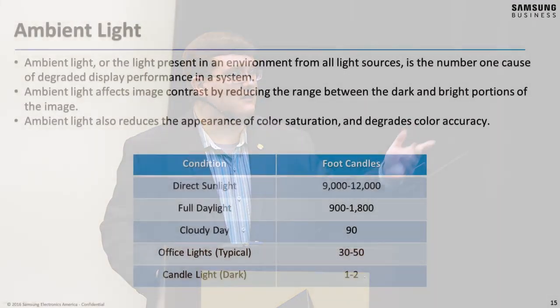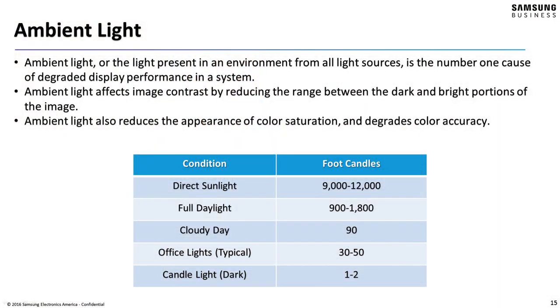Brightness ranges widely: a dimly lit room with candlelight can be one to two foot candles; office lights like this room are 30 to 50 foot candles; outside on a cloudy day about 90 foot candles; full daylight not in direct sunlight can be 90 to about 2000 foot candles; direct sunlight can get into the hundreds of thousands of foot candles depending on your environment. You need to know how bright the space is to estimate how bright your display needs to be. We're going to use the rule of five to one — not a perfect rule, but a starting place.